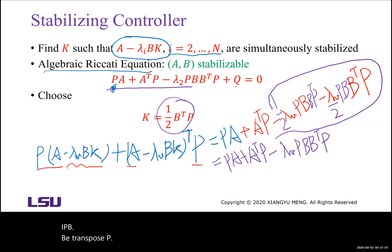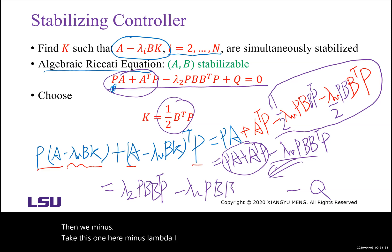From the algebraic Riccati equation, we know PA plus A transpose P equals lambda 2 PBB transpose P minus Q. Then we take this one here minus lambda i B K B B transpose P.